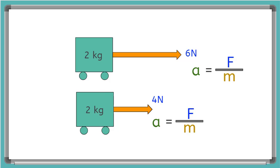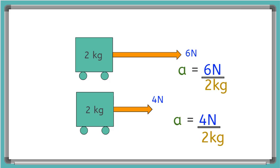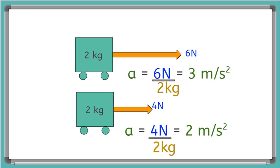Let's use some numbers. We have two carts each with a mass of 2 kilograms. The top cart is pulled with 6 newtons and the bottom with 4 newtons. Plugging into a equals F over M: the top cart has acceleration of 6 newtons divided by 2 kilograms equals 3 meters per second squared, and the bottom cart has 4 divided by 2 equals 2 meters per second squared.